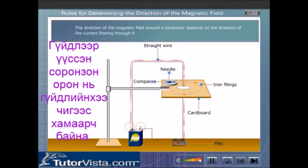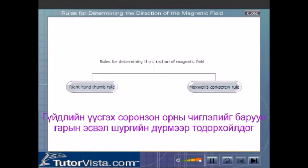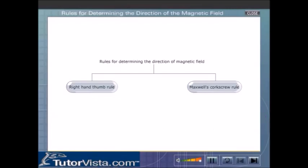This shows that the direction of the magnetic field around a conductor depends on the direction of the current flowing through it. Instead of using a compass needle every time, we can determine the direction of magnetic field by using rules like Right Hand Thumb Rule and Maxwell's Corkscrew Rule.